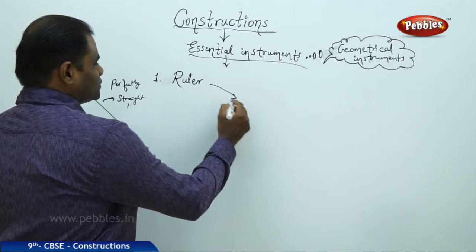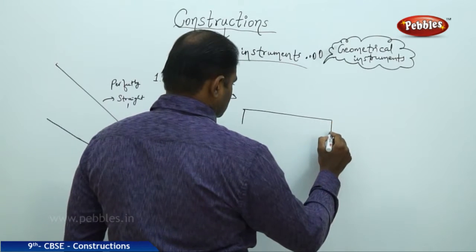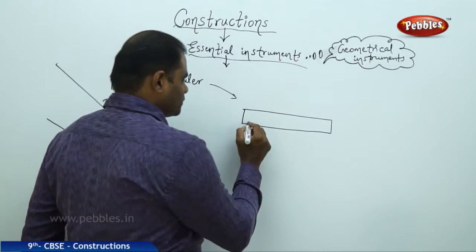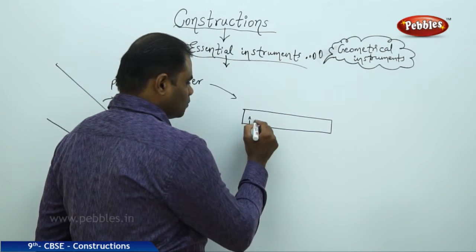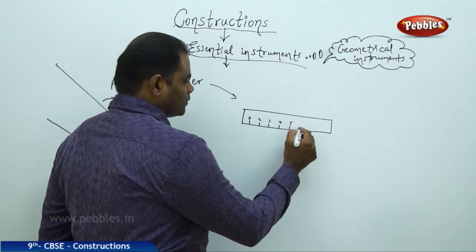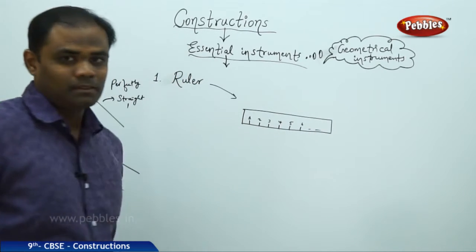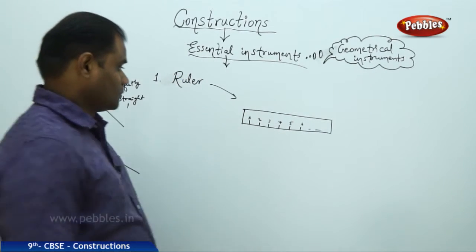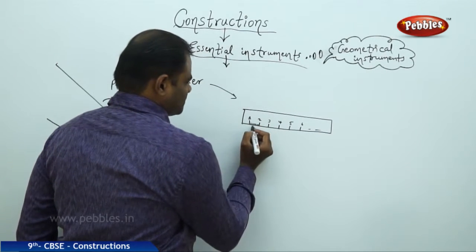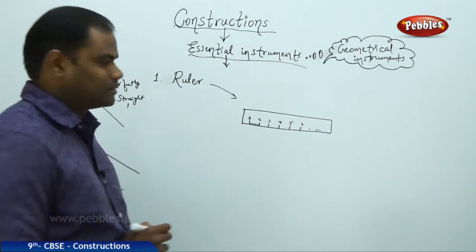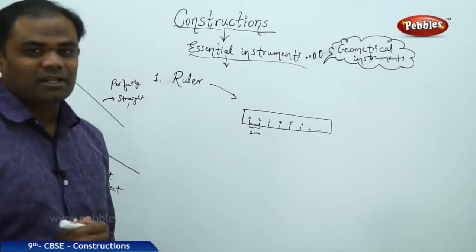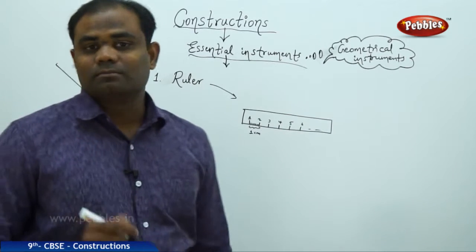Usually a ruler has the measurements in each of its side where it starts with 0, 1, 2, 3, 4, 5, 6, up to 10, up to 20, and it has subgrids divided up to 10. So there will be 10 in number, which gives me millimeter. So here this length makes 1 centimeter, and each of the smaller lengths makes 1 millimeter.